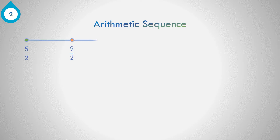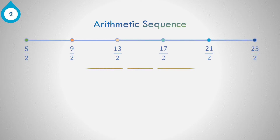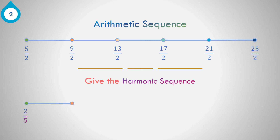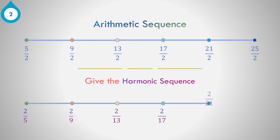How about the next example? Example number 2: 5/2, 9/2, 13/2, 17/2, 21/2, and 25/2. What do you think is the harmonic sequence? Correct. The answer is 2/5. The reciprocal of 9/2 is 2/9, then 2/13, 2/17, 2/21, and 2/25.